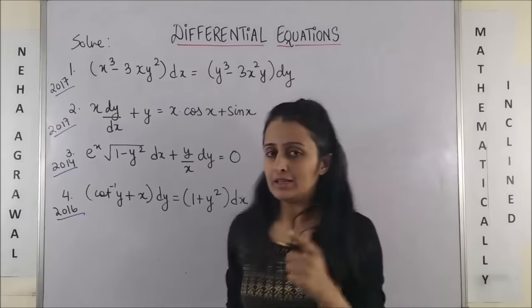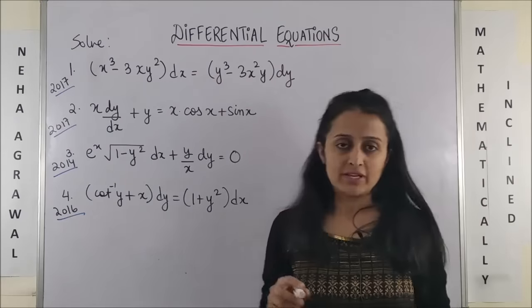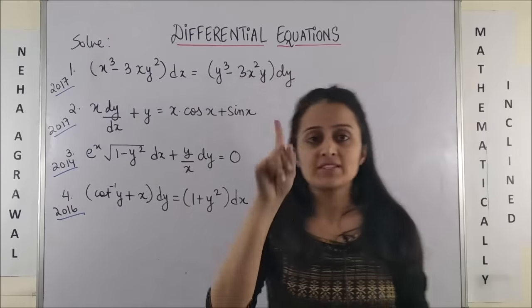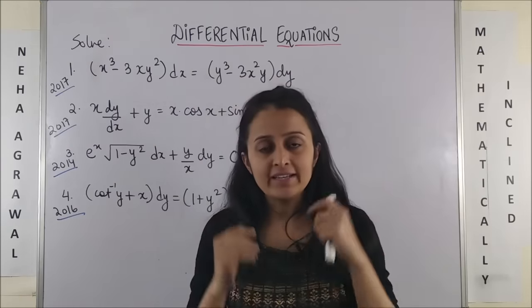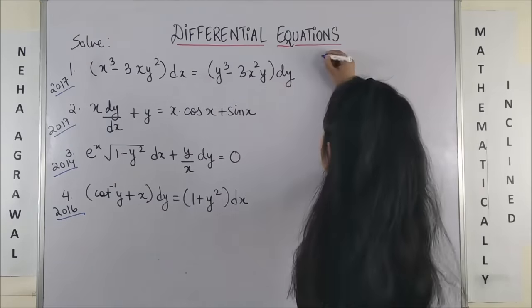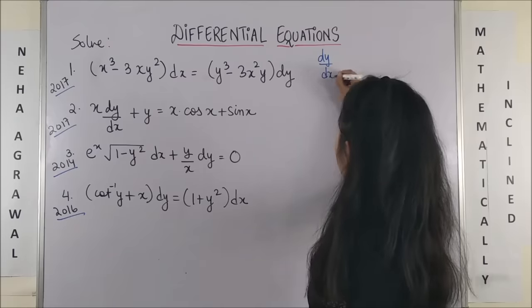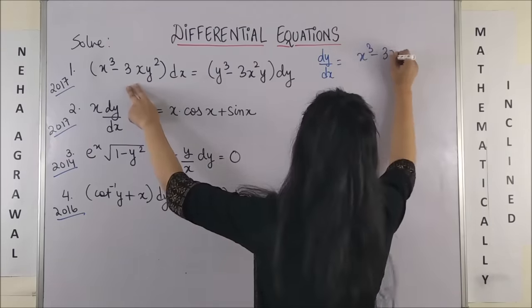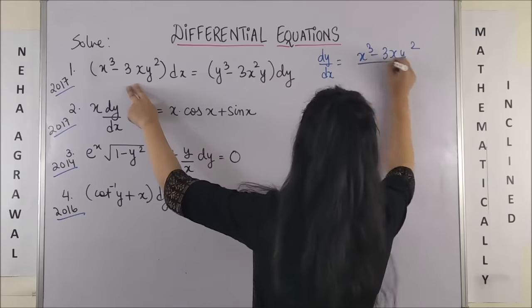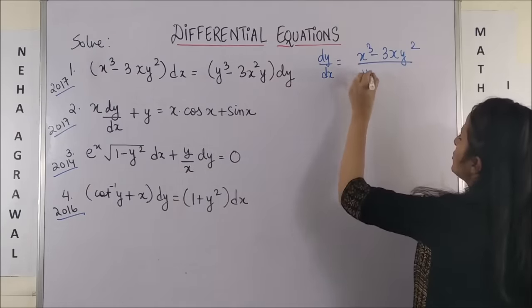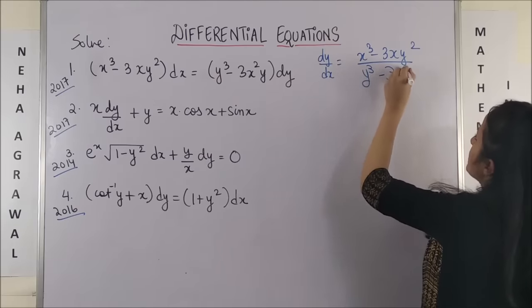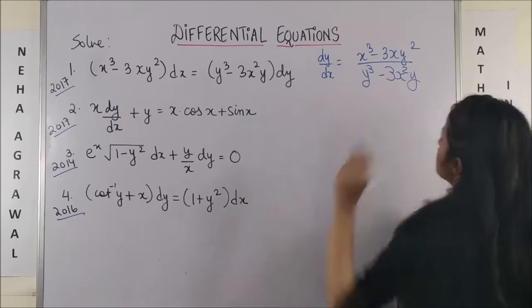Looking at the first question, came in Delhi 2017. This is the equation. Step 1, write everything in terms of dy by dx. So, this will become dy by dx is equal to x cube minus 3xy square upon y cube minus 3x square y.